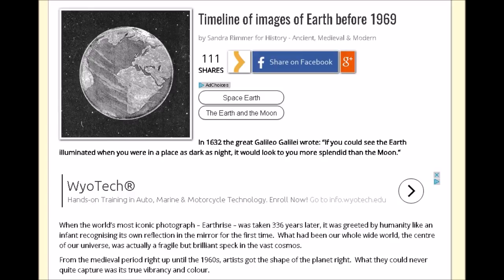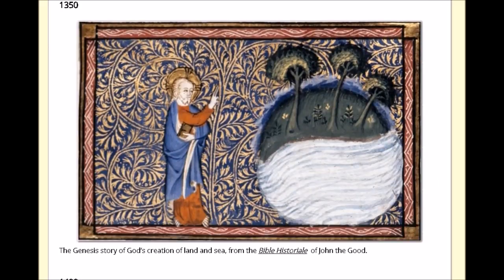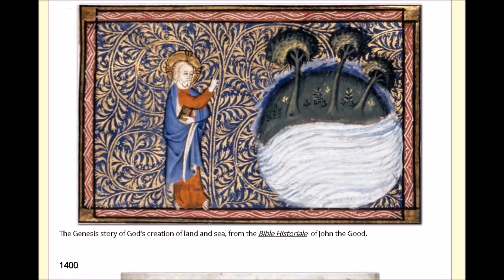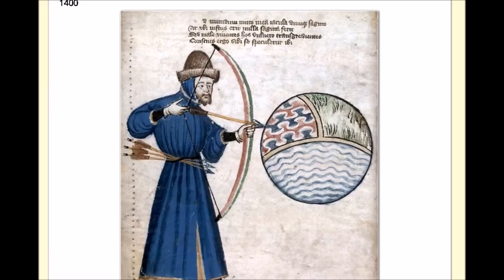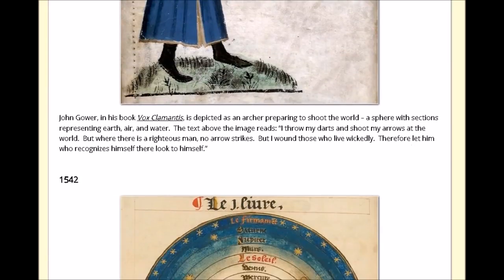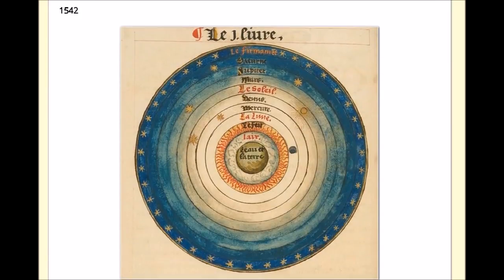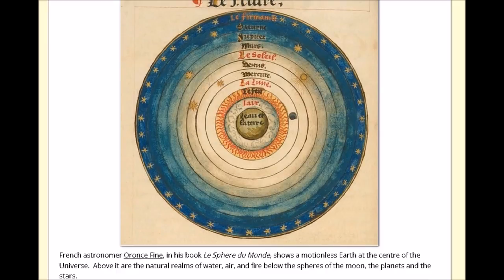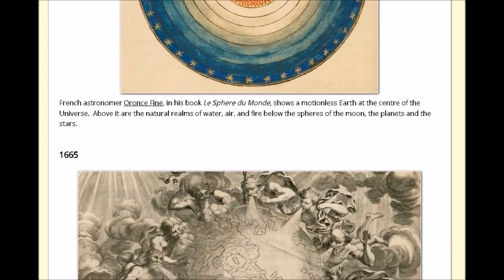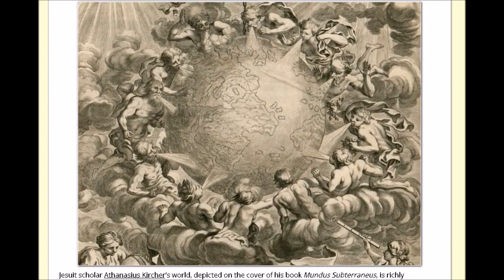When you scroll through, you can see they start in 1350 with this Genesis story picture, and then you have the 1400 — a guy with an arrow shoots the earth, which is the elements. And then the 1542, which interestingly enough has the earth in the center of the universe with the realms of water, air, and fire below the spheres of the moon, planets, and stars. That one's kind of interesting. And then 1665, you have the Jesuit creation there, and the Jesuits get busy, I suppose.